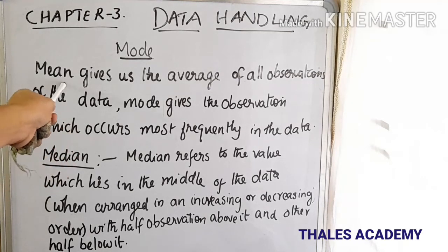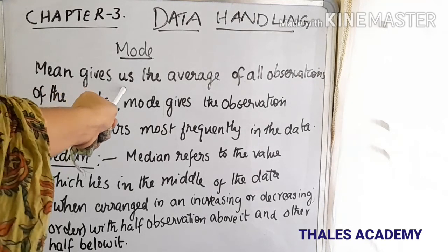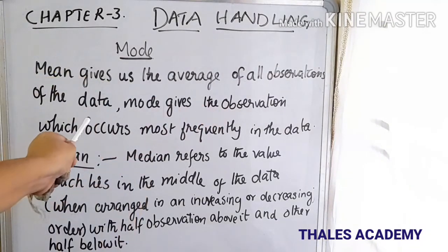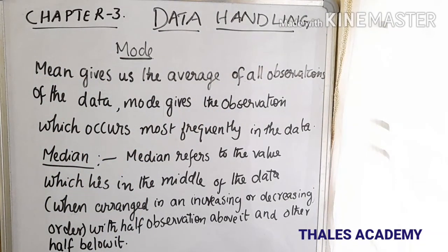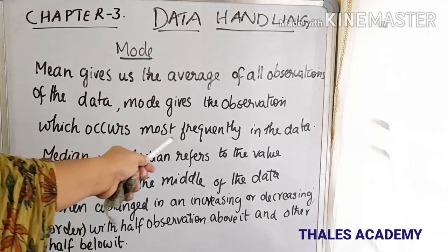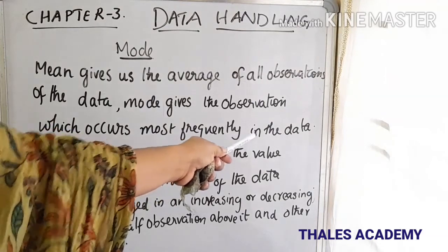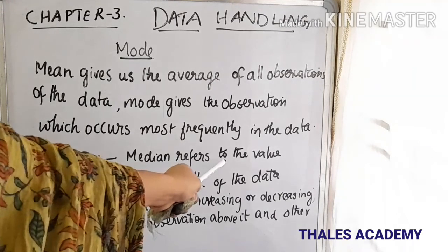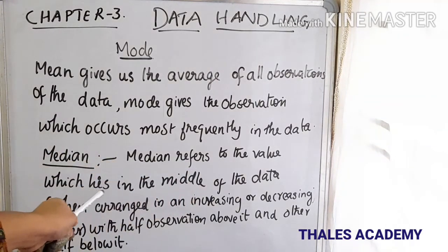The mean gives us the average of all observations of the data, whereas mode gives us the observation which occurs most frequently in the data.